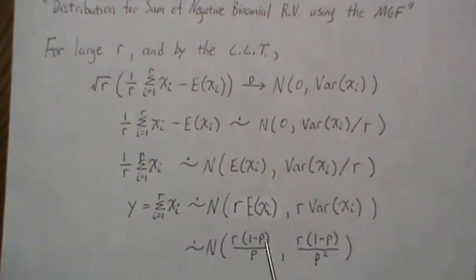Now we know the mean and the variance of a negative binomial with r equal one. It's one minus p over p, and then this is one minus p over p squared.